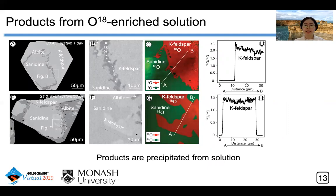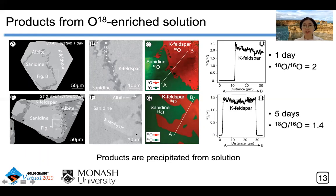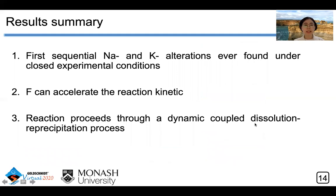This means that the reaction products are precipitated from solution, with oxygen-18 from solution incorporated into the framework of the new feldspar. Also, the oxygen-18 to oxygen-16 ratio of K-feldspar decreased from 2 to 1.4 over 5 days, suggesting that oxygen-16 in solution increased with reaction time as a result of sanidine dissolution. In summary: this is the first sequential sodic and potassic alteration found under closed experimental conditions; fluorine can accelerate reaction kinetics, with a larger amount of K-feldspar formed within only one day; and the reaction proceeds through a dynamic coupled dissolution-reprecipitation process.